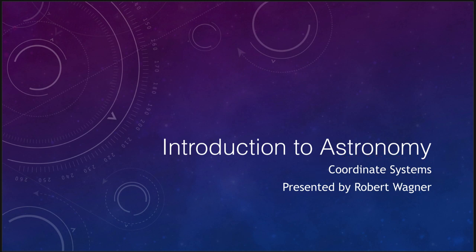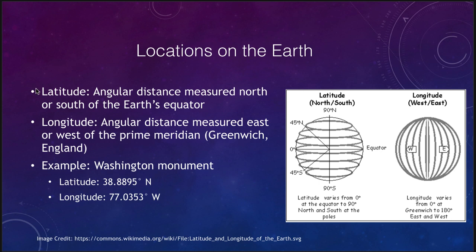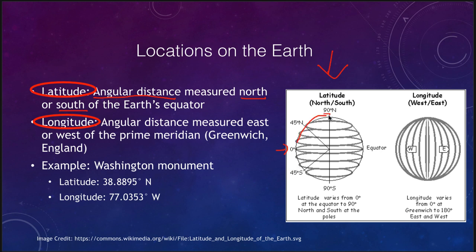Let's start off looking at the earth first. How do we determine positions on the earth? We use two different coordinates: latitude and longitude. Specifying those two coordinates allows us to determine exactly where an object is on the surface of the earth. Latitude is an angular distance measured north or south of the Earth's equator. Looking at the first image here, the Earth's equator is zero degrees, and you can go up to plus 90 degrees at the north pole, or down to negative 90 degrees at the south pole. It has a maximum latitude of 90 degrees.